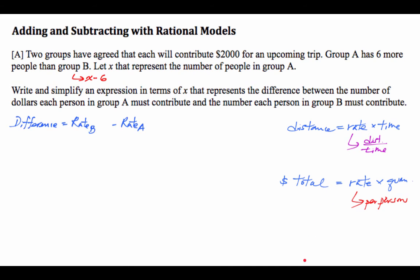So the difference is the rate of group B minus the rate of group A. The rate being the individual rate that you would pay as an individual. So that would be 2,000 divided by x minus 6 minus 2,000 divided by x.